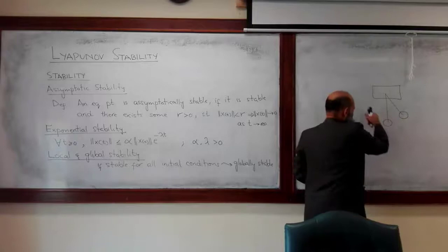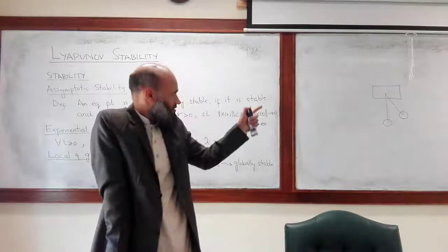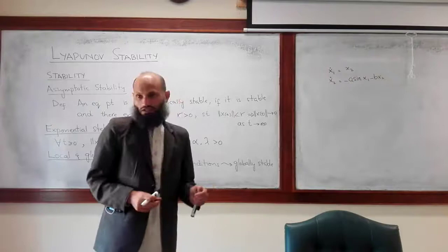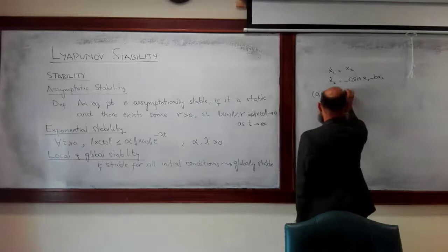So, if along the trajectories a system loses its energy, then that equilibrium point is a stable equilibrium point. For a pendulum with friction, we know that it has two equilibrium points: (0, 0) and the second equilibrium point (π, 0).